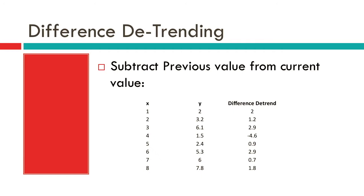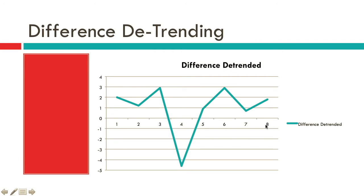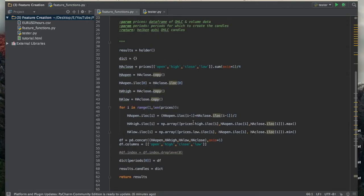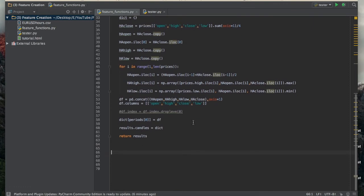The steps for linear detrending are: fit the linear curve, get the value of the curve at each point, and subtract those values off. Difference detrending is where we just subtract the previous value from the current value. We can't do this for the very first value, so we start at the second one. For example, 6.1 minus 3.2 is 2.9, and 1.5 minus 6.1 is negative 4.6.